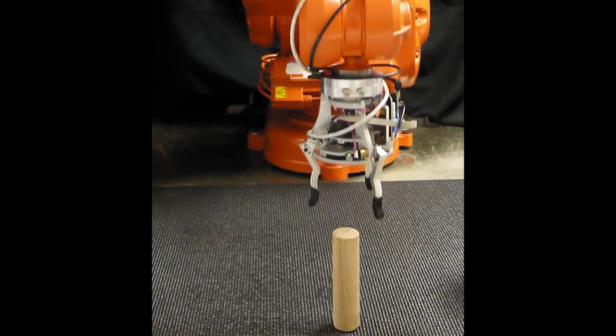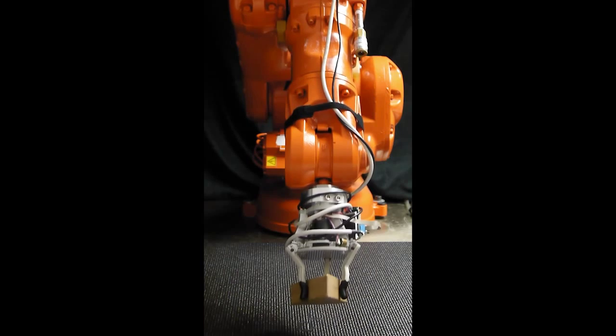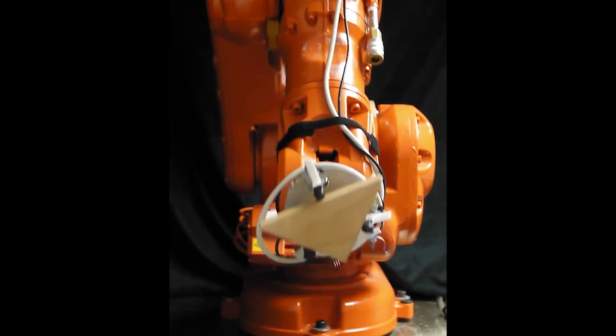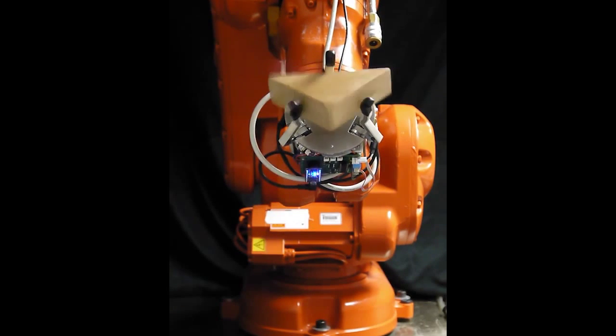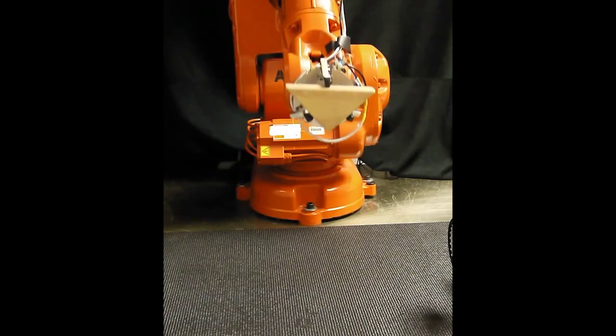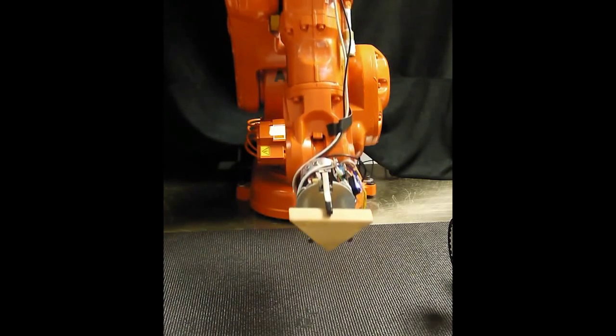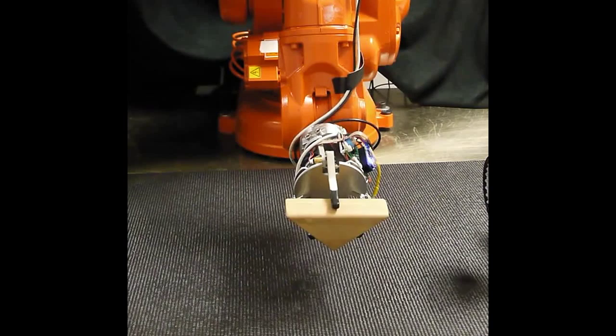As you can see, none of these regrasps depend heavily on the intrinsic capabilities of the hand to manipulate objects, but rather make use of external resources. We call this dexterity extrinsic dexterity.